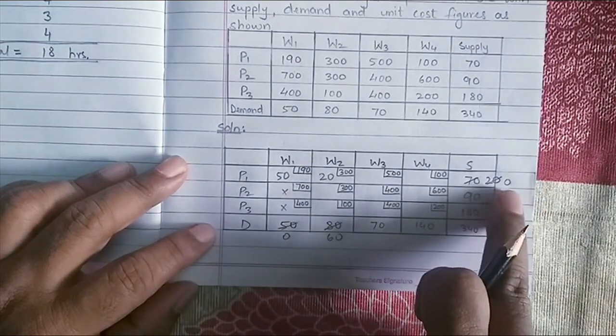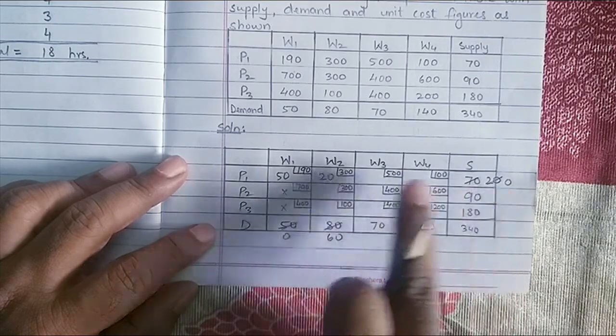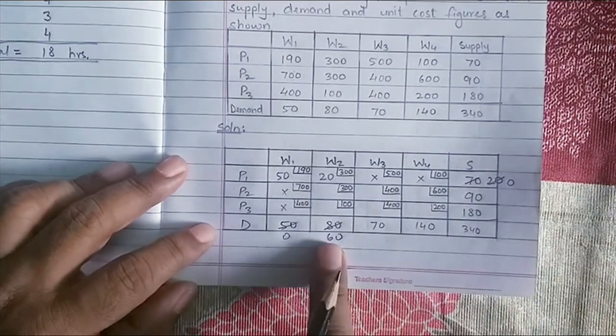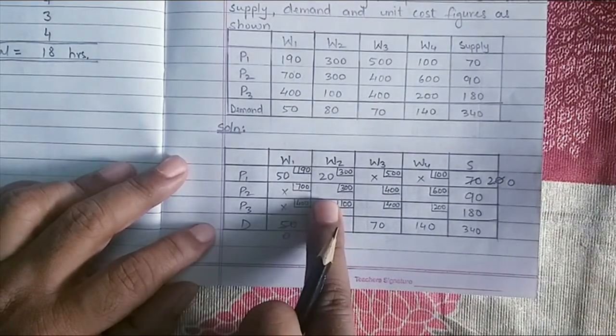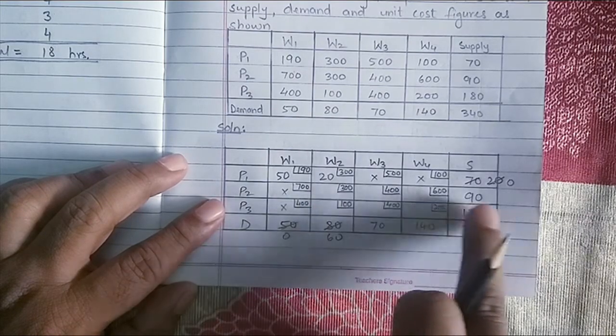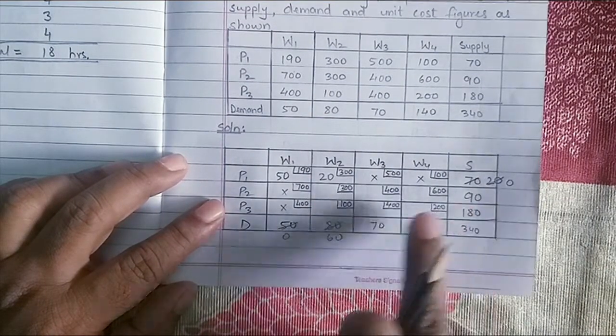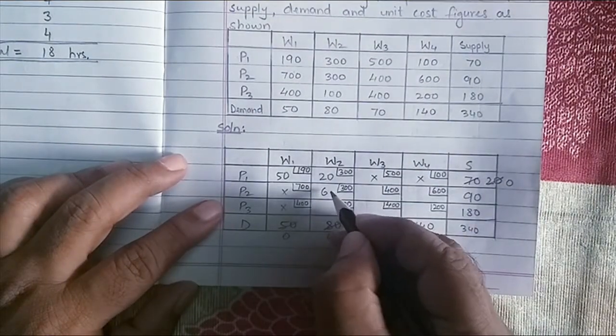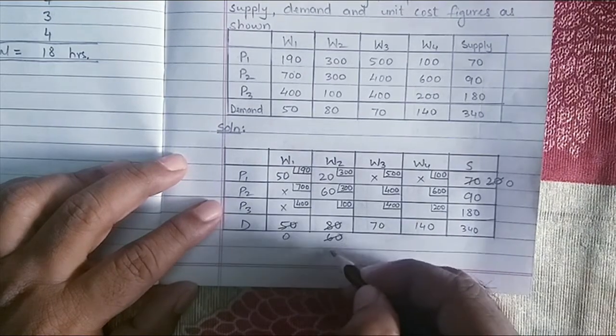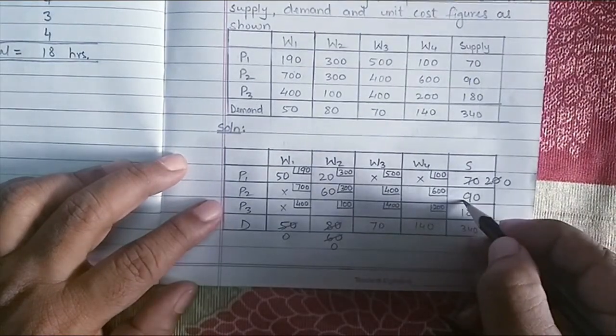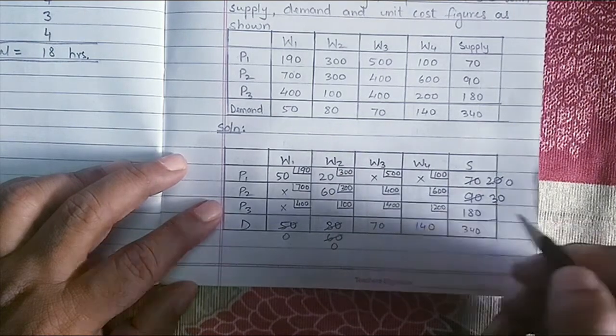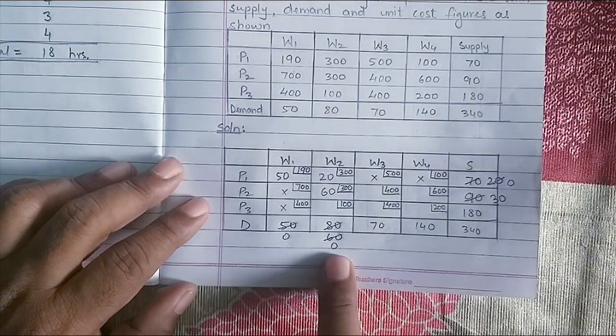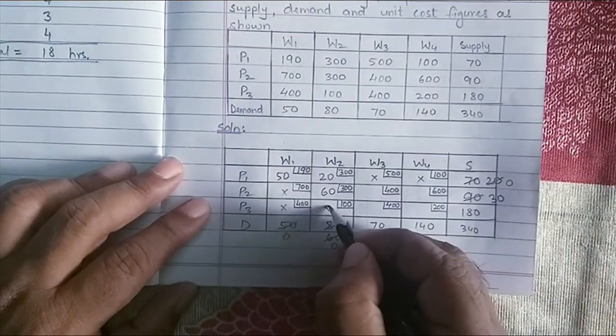This row, we have 0 supply remaining. So I need to put a cross in these two cells. The next cell is P2, W2. Supply is 90 and demand is 60. The least is 60. So I'll assign 60 here. Subtract 60 from the demand and from the supply. So supply, we have 30 remaining, whereas in demand it is 0. So I'll put a cross in the cell here.